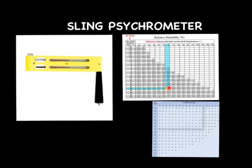Relative humidity tells us how much moisture is in the atmosphere at a given temperature. With that information, we can go to another chart and look at the relative humidity and the temperature to determine the dew point. The dew point is the temperature at which water vapor in the atmosphere begins to condense — or change from a gas to a liquid. All of these tools are very important in determining weather and predicting future weather.